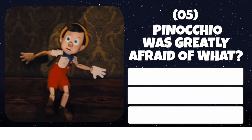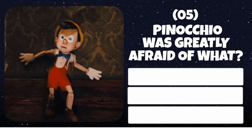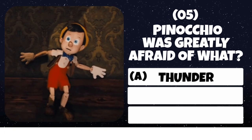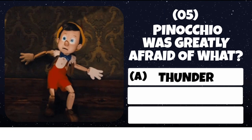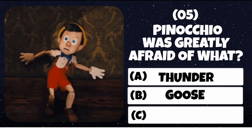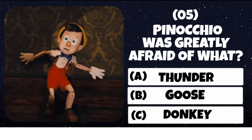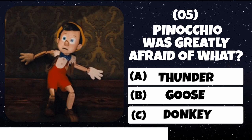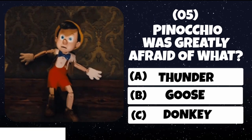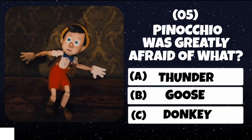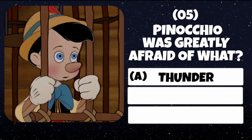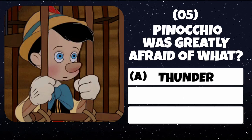Question number 5. Pinocchio was greatly afraid of what? Option A: Thunder and lightning. Option B: Goose. Option C: Donkey. Correct answer is Thunder and lightning.